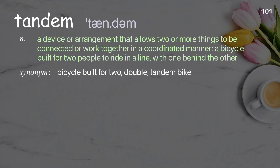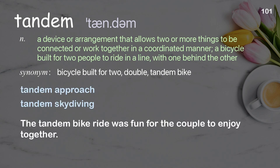Tandem: A device or arrangement that allows two or more things to be connected or work together in a coordinated manner; a bicycle built for two people to ride in a line, with one behind the other. Examples: Tandem approach. Tandem skydiving. The tandem bike ride was fun for the couple to enjoy together.